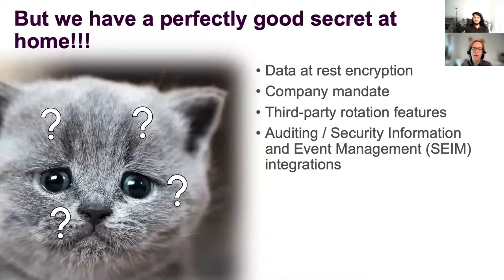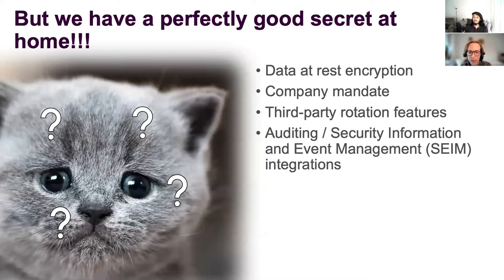So why are we talking about external secret storage when Kubernetes has a perfectly good one built in? First, Kubernetes secrets may not meet your data or encryption requirements, although there are KMS providers to enable data encryption. But depending on your organization, you may have already standardized on a third-party secret solution. Your external secret solution may have some sort of secret rotation story or integrations you're looking to leverage. And finally, if your organization has already invested in auditing and alerting on a third-party secret system, you may not want to duplicate that effort for your Kubernetes secrets.